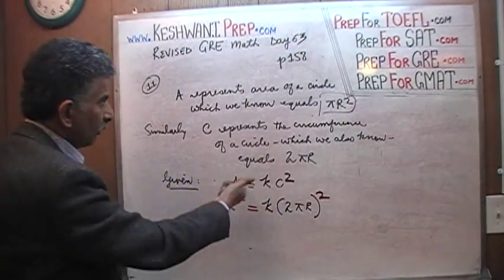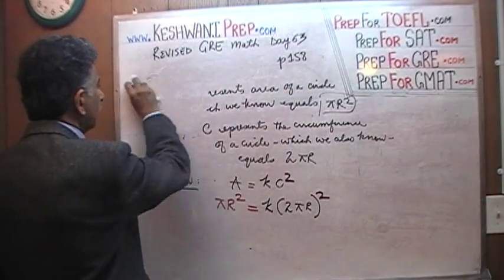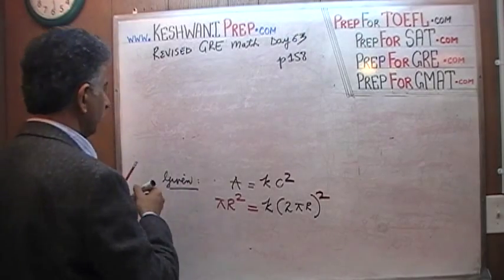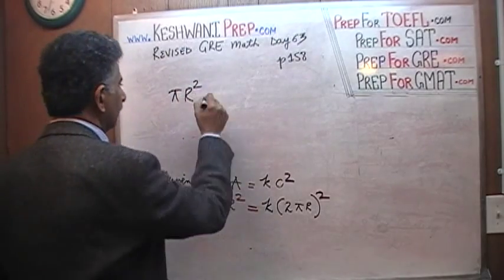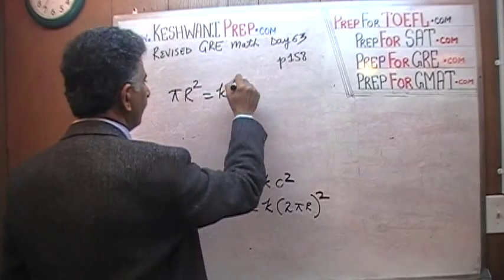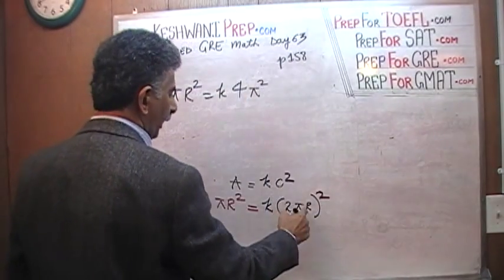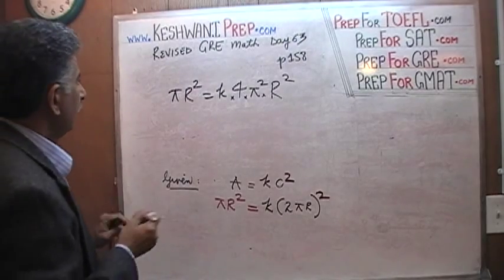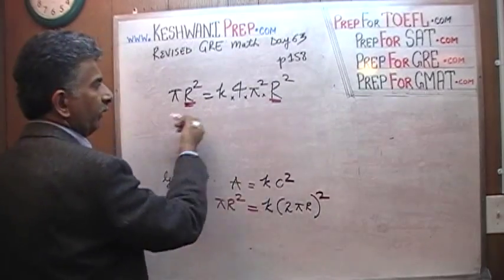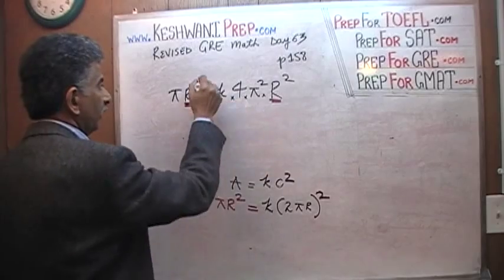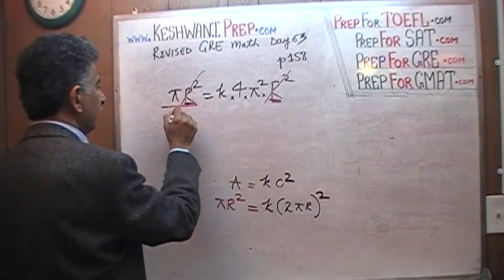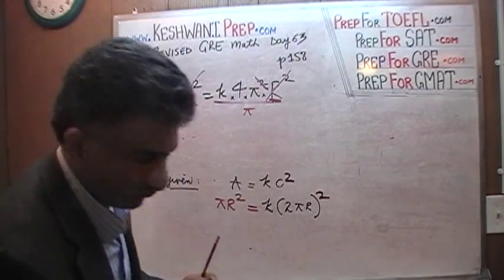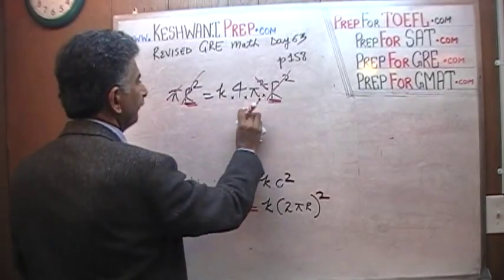We are just going to work on this. Pi r squared equals k times 2 squared is 4, pi squared is pi squared, r squared is r squared — everything is being multiplied. Now, what do you notice? I see r squared here and r squared here. If you divide both sides of the equation by r squared, r squared will drop out. If we also divide both sides by pi, this pi will drop out.